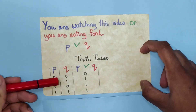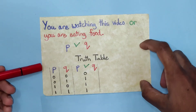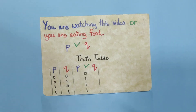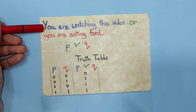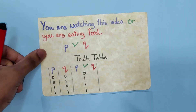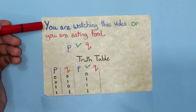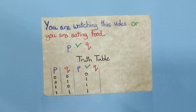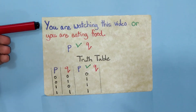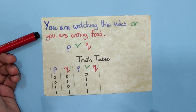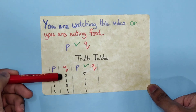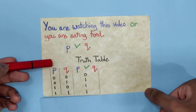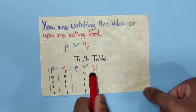So P can be 0 and Q can be 0, P can be 0 and Q can be 1, and so on. This truth table makes sense when you think about it. If I were to tell you 'you are watching this video or you are eating food,' in which circumstances would I be correct? I would be correct if you were watching this video and not eating food — because I said 'or,' I would still be correct. Also, you could not be watching this video but be eating food, and I would still be correct. You could also be doing both. The only time I would be wrong is if you were not watching this video and not eating food — that's when P is 0 and Q is 0, so P or Q is 0. In the truth table, P and Q are the inputs, and P or Q is the output.